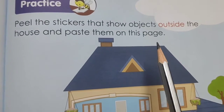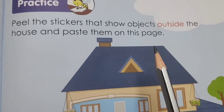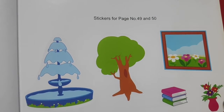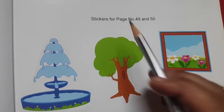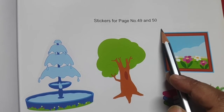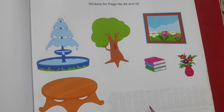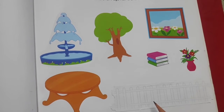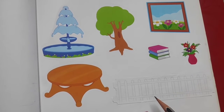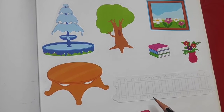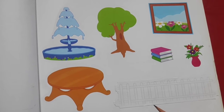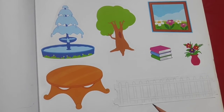On the last page of the book, some stickers are given. Stickers for page number 49 and 50 are given there. You have to paste the objects that are outside the house on page number 49, and the objects that are inside the house on page number 50. First, we will paste the stickers that are outside the house on page number 49.